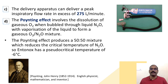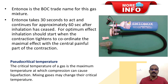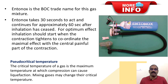Entenox has a pseudo-critical temperature of minus 6 degrees Celsius. I have shown the picture of John Henry Poynting, the English physicist, mathematician, and inventor behind this principle of mixing oxygen with nitrous oxide. Entenox per se is the BOC trade name for the gas mixture. Entenox takes 30 seconds to act and continues for approximately 60 seconds after inhalation has ceased. For optimum effect, inhalation should start when the parturient feels the contraction tighten, to coordinate the maximal effect with the painful part of the contraction.